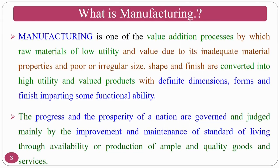Manufacturing is one of the value addition processes by which raw materials of low utility and value — due to inadequate material properties and poor or irregular size, shape, and finish — are converted into high utility and valued products with definite dimensions, forms, and finish, imparting some functionality. That means you have a low-value raw material, and in order to convert it into a high-value added product you make use of the manufacturing process, changing shape, size, and finish as required.